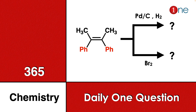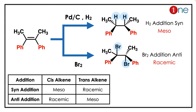You have to find what these two reagents do differently and what kind of different products are obtained. The answer lies in the type of addition. Syn addition of cis-stilbene leads to meso; syn addition of trans-stilbene leads to racemic. Similarly, anti-addition of cis-stilbene leads to racemic, and anti-addition of trans-stilbene leads to meso.